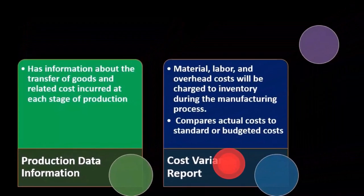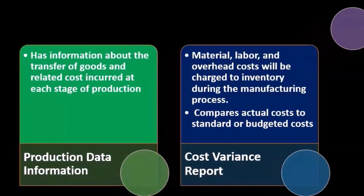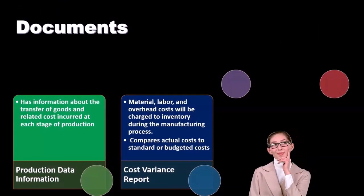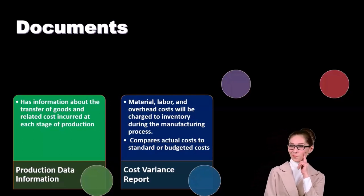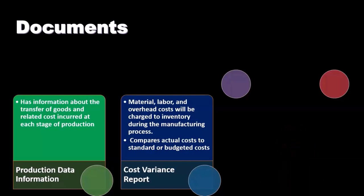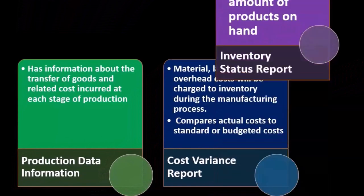The cost variance report: material, labor, and overhead costs will be charged to inventory during the manufacturing process. Those are the three components to consider if we produce inventory. This report compares actual cost to the standard or budgeted cost, showing the difference between what was budgeted for these components and what actually happened.